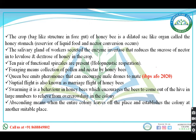It is the worker's salivary gland that does this. Foraging means simply the collection of pollen and nectar by the honeybees. Queen bee emits pheromones. Mating between a queen and the drone occurs during the nuptial flight, also known as the marriage flight.